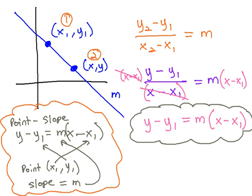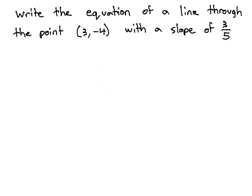Let's take a look at an example where we know the point and the slope, and we're going to plug those values in to come up with the equation that connects the point with the slope. Here, we want the equation of a line through the point 3, negative 4, with a slope of 3 fifths.